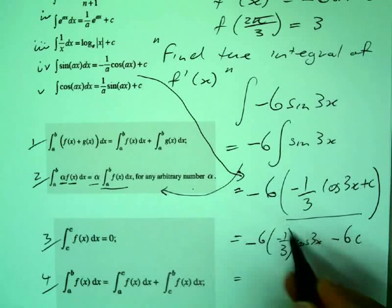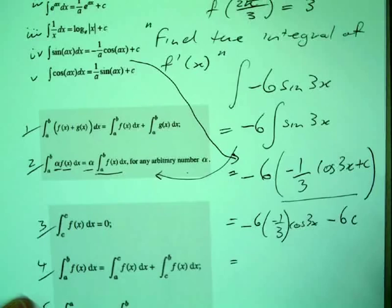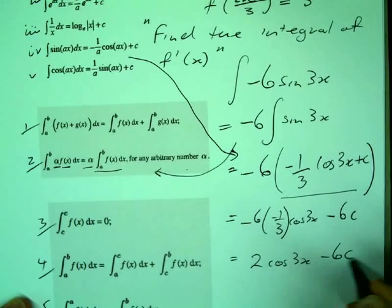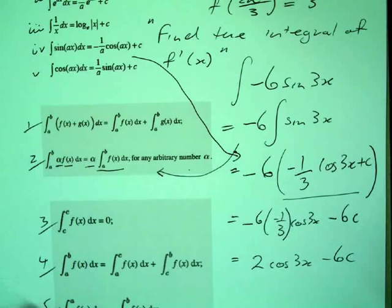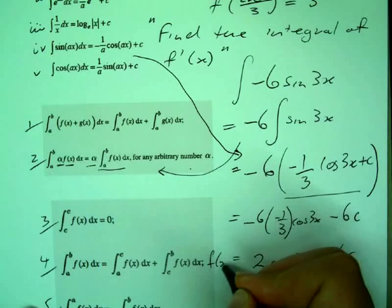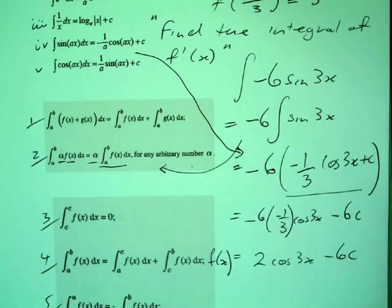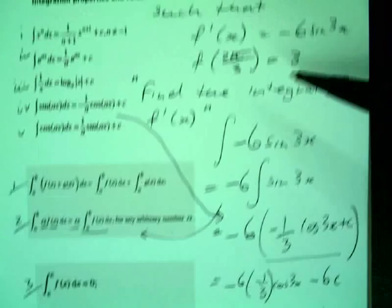Now I can tidy that up. What does this become? 2. So I'll get 2 cos 3x take 6c, yeah? And that is actually our f(x) now. Alright?